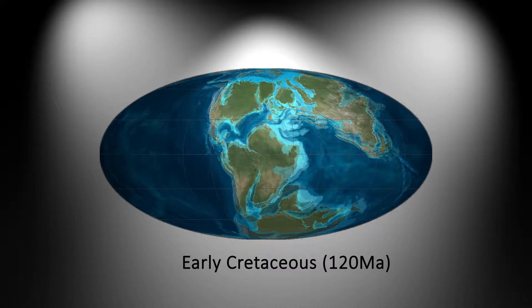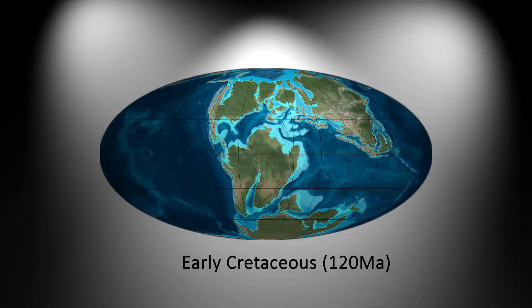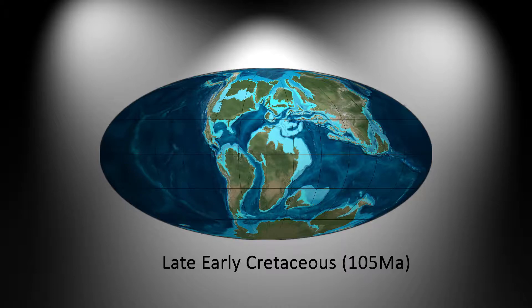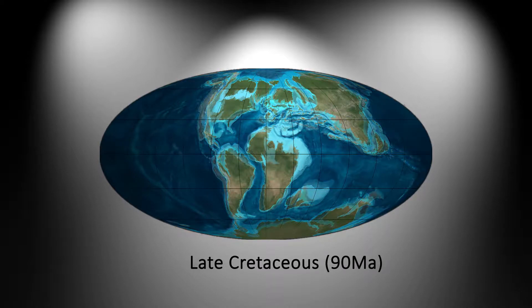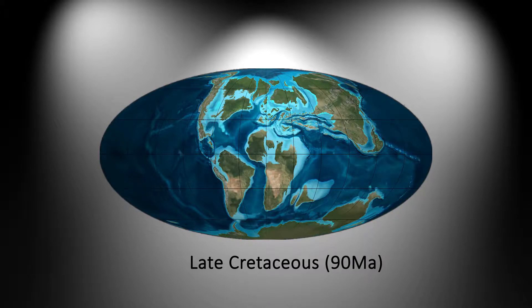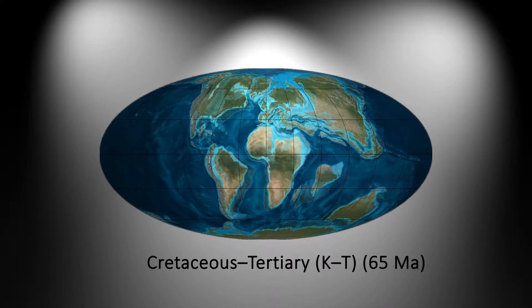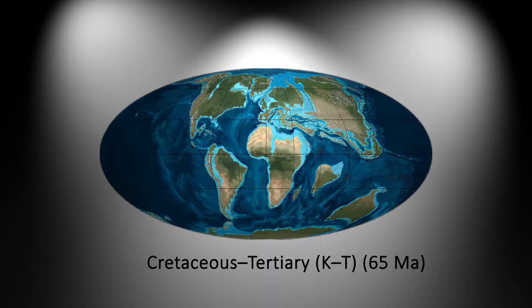Early Cretaceous, 120 million years ago. Late Early Cretaceous, 105 million years ago. Late Cretaceous, 90 million years ago. Cretaceous-Tertiary, 65 million years ago. After the Cretaceous era, a big asteroid struck what is now Mexico, causing the mass extinction that wiped the dinosaurs off the face of the Earth, also known as the Cretaceous-Tertiary extinction.